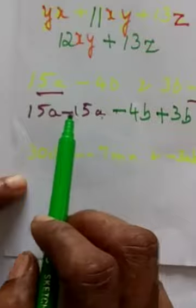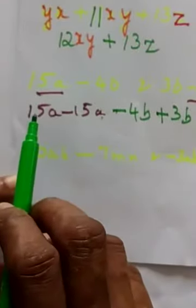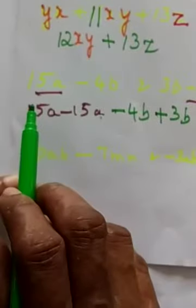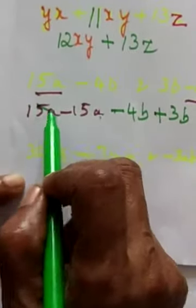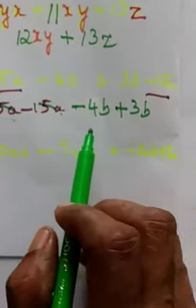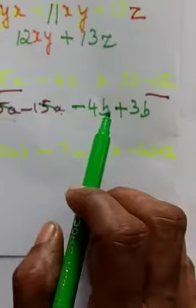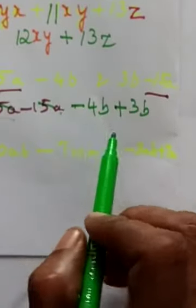Here opposite signs, plus and minus. Both bigger number, they are same numbers. So plus minus get cancels. 15a minus 15a means 0. You need not write 0a. Here both b's are like terms. Put minus sign here.